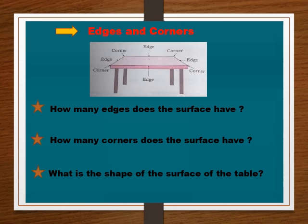The surface of the table has four edges. Tableachya purustbhagala chaar kada aahe. How many corners does the surface have? Ya purustbhagala kiti kopre aahe? The surface of the table has four corners. Ya purustbhagala chaar kopre aahe.